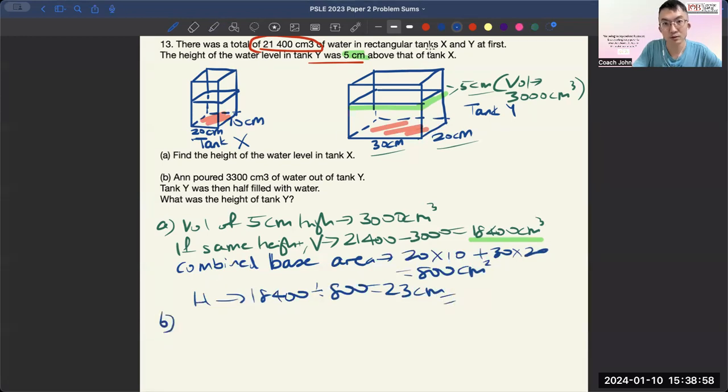Okay, what about for B? For B, pour 3,300 cm cubed, circle the numbers, of water out of Tank Y, and then Tank Y was then half filled with water. What was the height of Tank Y? Okay, so in this case, to find the height of Tank Y, we have to find the total volume of Tank Y.